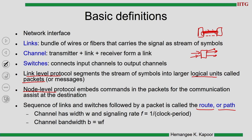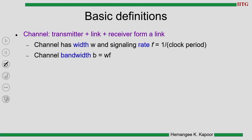Every channel is made up of links, that is, a bundle of wires. Depending on how many wires we have, we define the width of that channel. We also have a signaling rate, which is the frequency at which we can send these symbols — it equals 1 over the clock period. If we take the number of wires W multiplied by the frequency, we get the bandwidth. Bandwidth is the number of bits sent per unit time, so higher bandwidth means more data can be transferred.